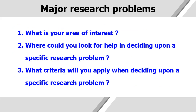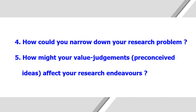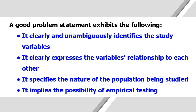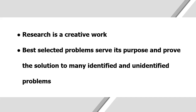Now let's see the major research problems. These include: What is your area of interest? Where could you look for help in deciding upon a specific research problem? What criteria will you apply when deciding upon a specific research problem? How could you narrow down your research problem? And how might your value judgments or preconceived ideas affect your research endeavors? A good problem statement clearly and unambiguously identifies the study variables, expresses the variables' relationship to each other, specifies the nature of the population being studied, and implies the possibility of empirical testing. We can say that research is a creative work, and best selected problems serve their purpose and prove solutions to many identified and unidentified problems.